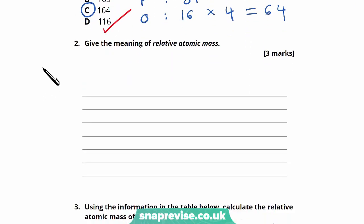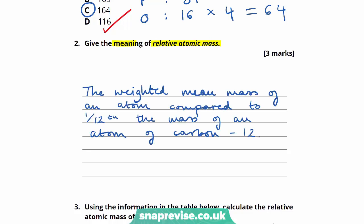Question 2 asks for 3 marks: give the meaning of relative atomic mass. You should know this definition well. The definition is: the weighted mean mass of an atom compared to 1/12 of the mass of an atom of carbon-12. The three marks come from: stating it's the weighted mean mass of an atom; explaining it's compared to 1/12 of the mass of something; and specifying that it's 1/12 of the mass of carbon-12.